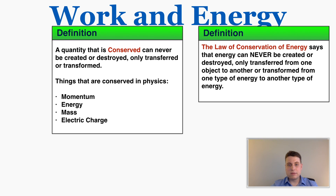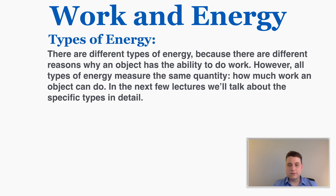So far we've covered momentum and energy, and touched on mass not being created or destroyed. There are different types of energy because there are different reasons why an object has the ability to do work, but all types of energy measure the same quantity: how much work an object can do. In the next few lectures we'll talk about these specific types of energy in detail.